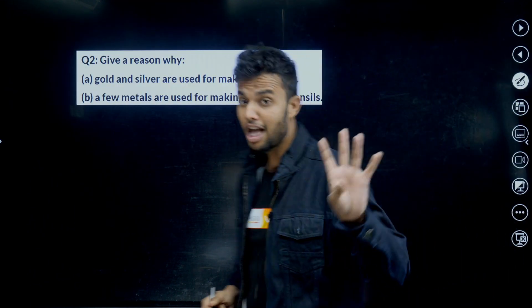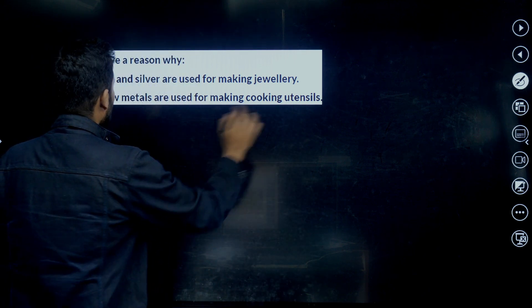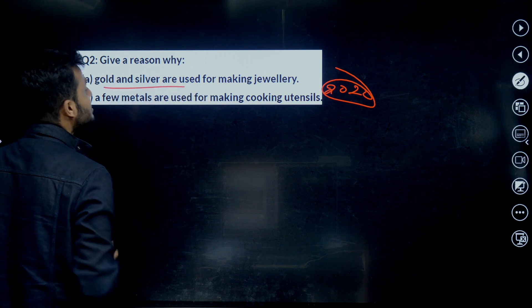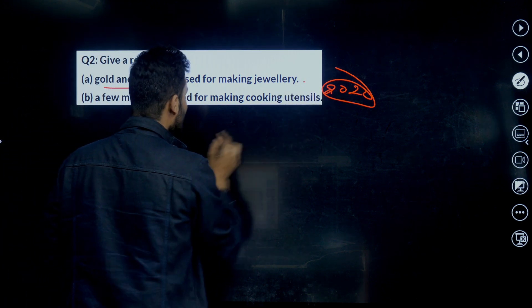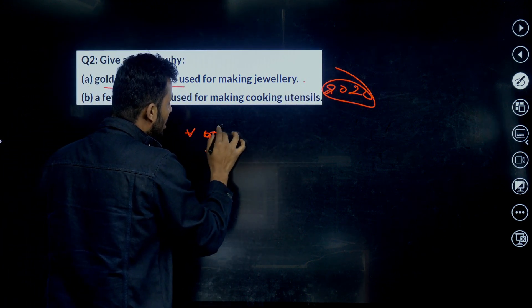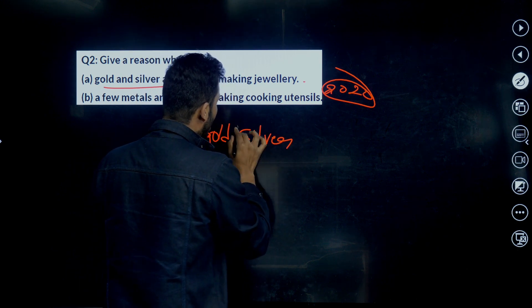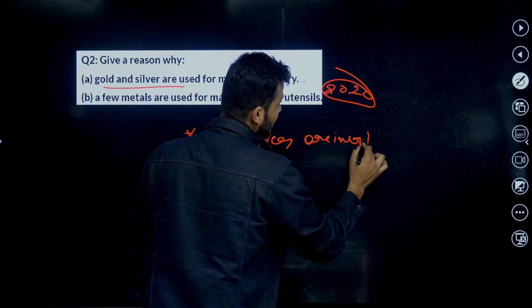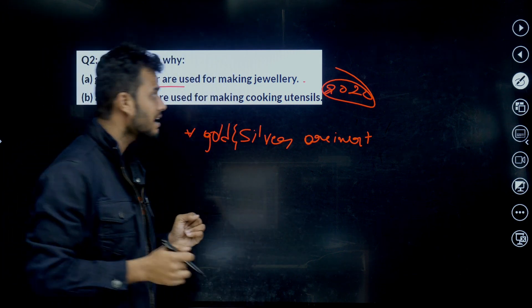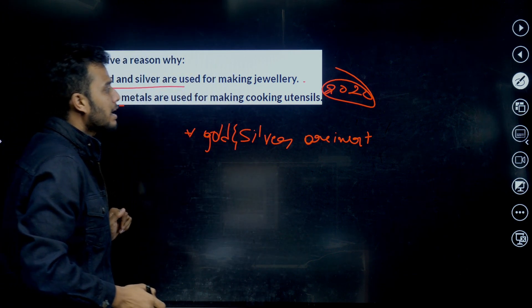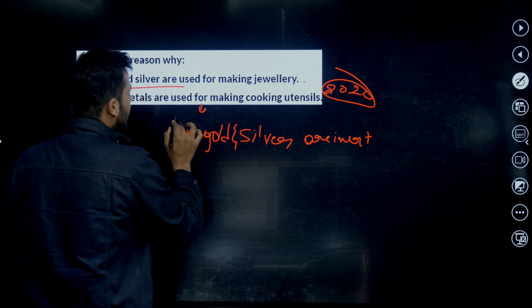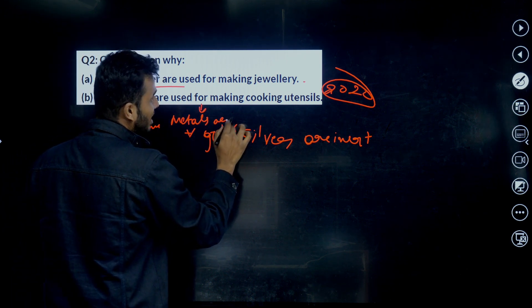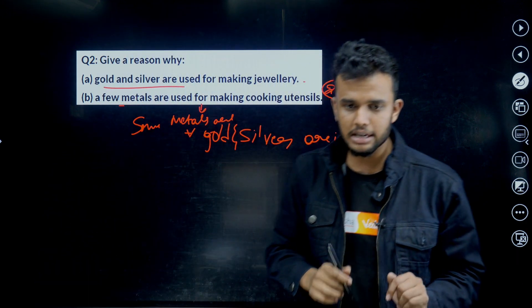Let's move for the second question. Give reason why - it's a 2020 question - gold and silver are used for making jewelry. Why? Gold and silver are called inert metals. Gold and silver are inert in nature. Inert in nature is nothing but it never reacts with oxygen, right. That's why. Second one: A few metals are used for making cooking utensils because metals are good conductors of heat. The metals are good conductors of heat. That is the answer.